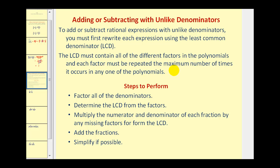Here's how we're going to do this: we'll factor all the denominators and we'll use these factors to determine the LCD. Then we'll multiply the numerator and denominator of each fraction by any missing factors to form the LCD. Then we'll add the fractions and simplify.